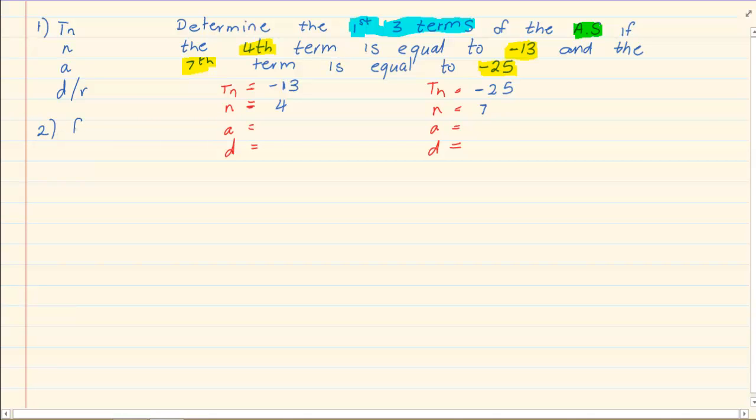Next you are going to write down the formulas. Now the formula for arithmetic is TN is equal to A plus N minus 1, D. So we are going to first fill in the information we have using the formula. Now I know that TN is minus 13. So we have minus 13 which we are substituting into TN is equal to A plus 4 minus 1, and then we have D which is an unknown. So we finally have minus 13 is equal to A plus 3D.